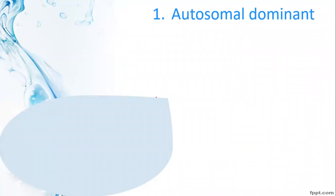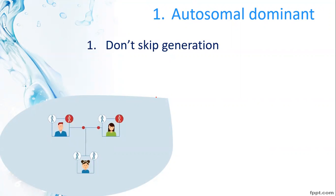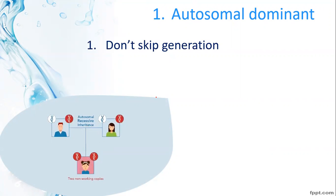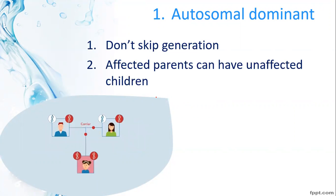First rule: Autosomal dominant disorders do not skip generations. The trait can be expressed in every generation — one generation after another. This is a very important trick for identifying autosomal dominant disorders: they are expressed in every single generation without skipping.